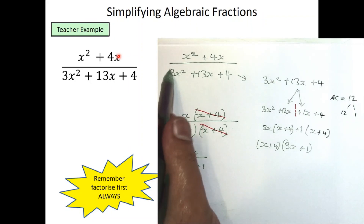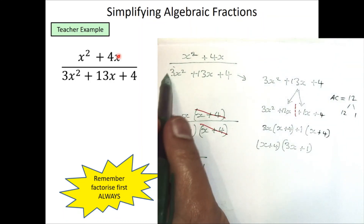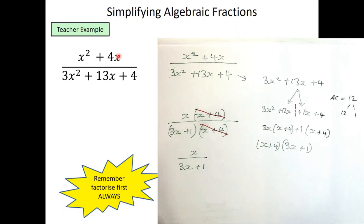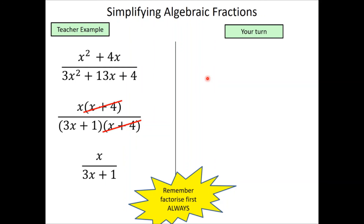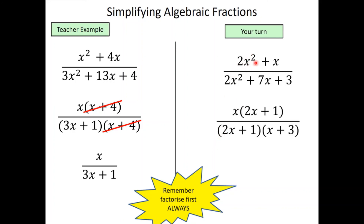For the next questions, use the AC method because the coefficient of x² is bigger than 1. Pause the video and try the question, then play to check. For that practice question: 2x² + x has x as a common factor, giving x(2x + 1). Factorizing the quadratic denominator using the AC method gives (2x + 1)(x + 3). The common factor (2x + 1) cancels on numerator and denominator, leaving x / (x + 3).